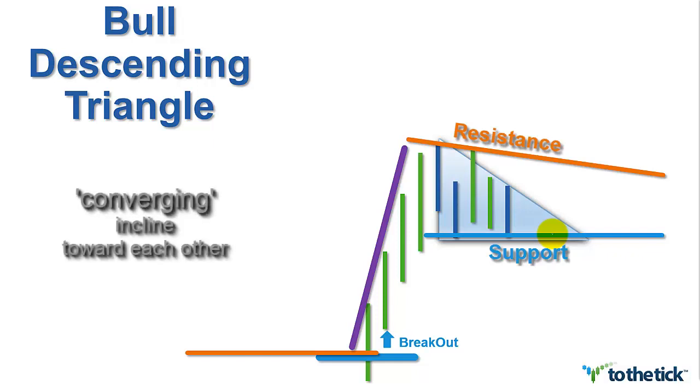Well, with a descending triangle, the upper resistance line should slope downwards toward the lower support line that is basically flat. You might have a tick or two in here, but it's basically equal on the bottom. If it holds that shape, that's what you're looking for in your descending triangle.